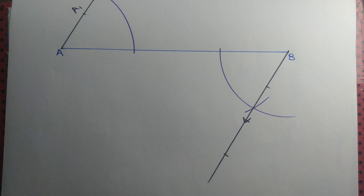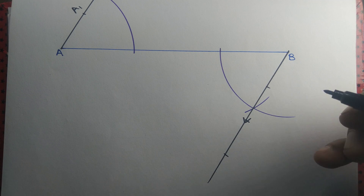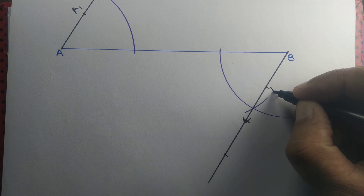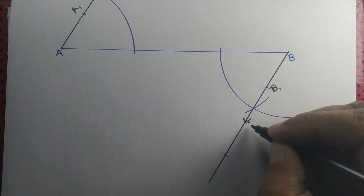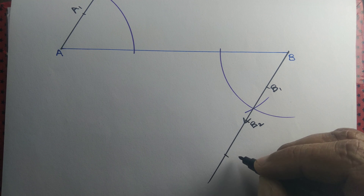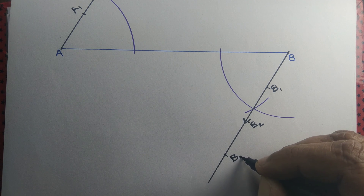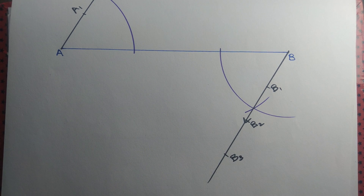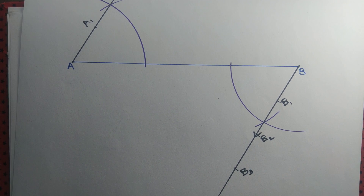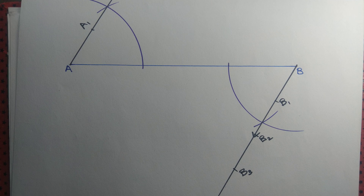Similarly, from point B, we take three points B1, B2, B3. These three points are equally spaced. Let's join A to B3.